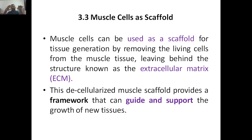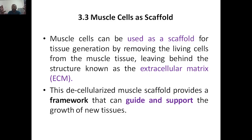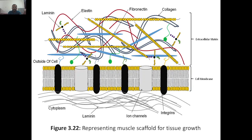You take a muscle, remove the cells, and separate the cells from the structure — that is the extracellular matrix. Now you have removed the cells. This ECM is called a decellularized muscle scaffold. It provides a framework that can guide and support the growth of new tissue. The ECM is the new muscle scaffold for tissue growth.